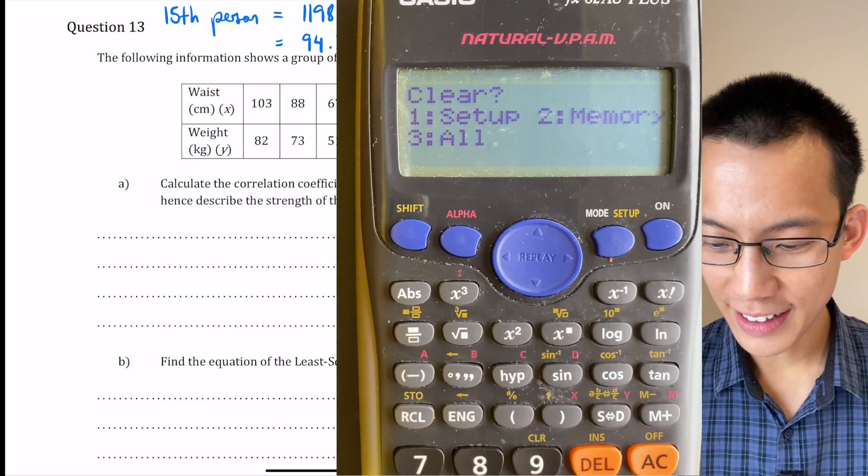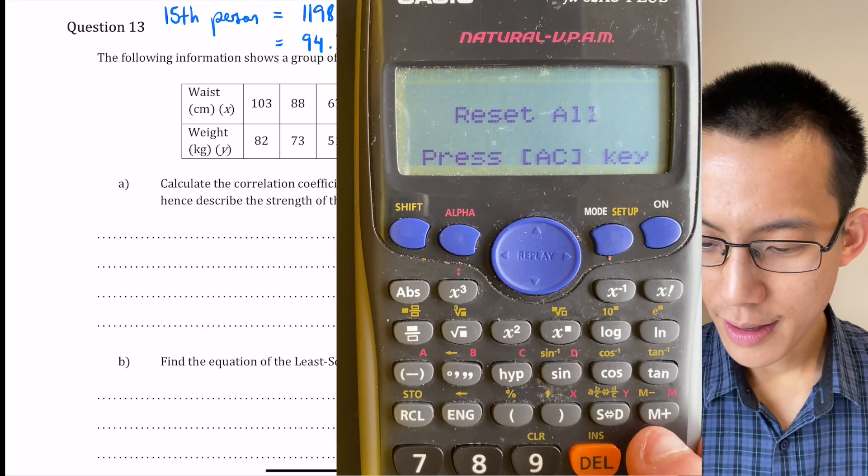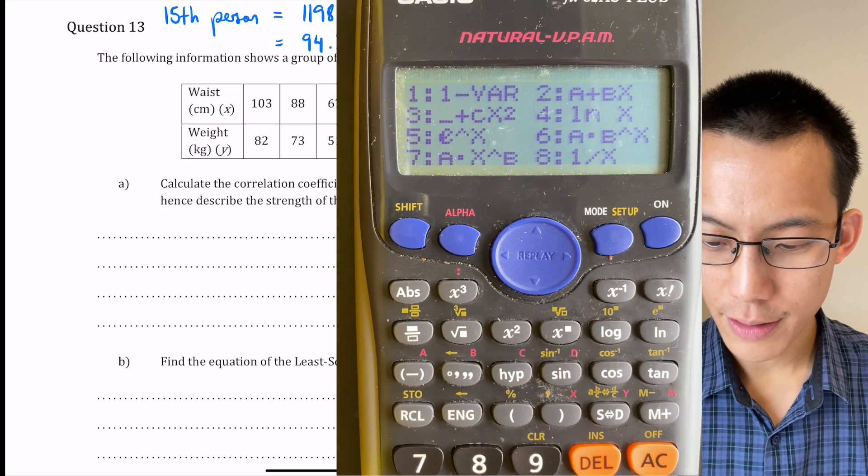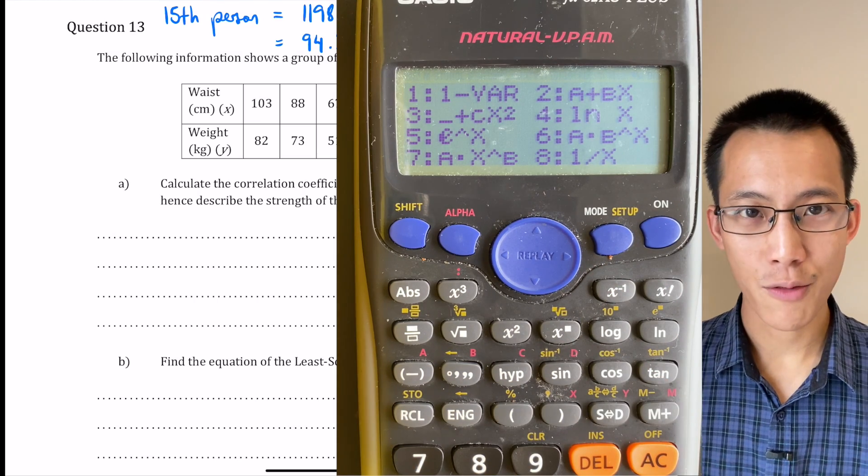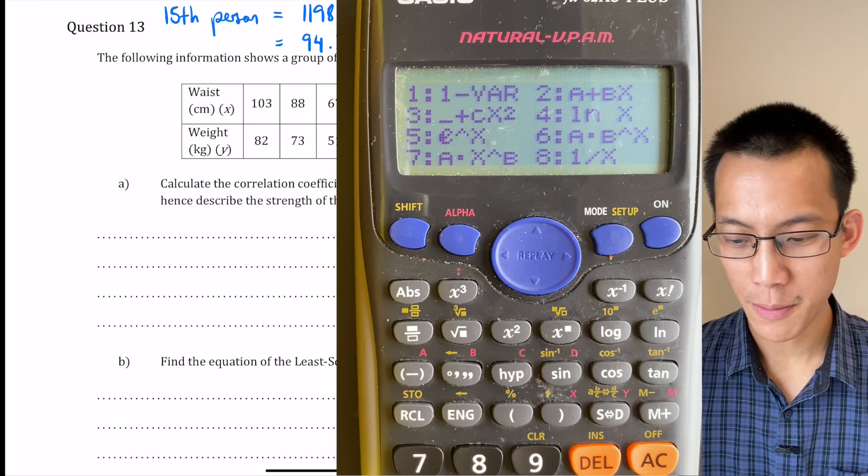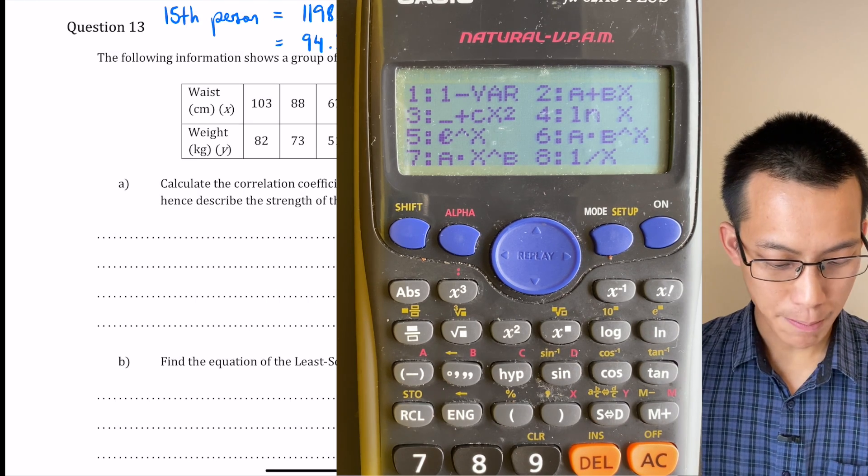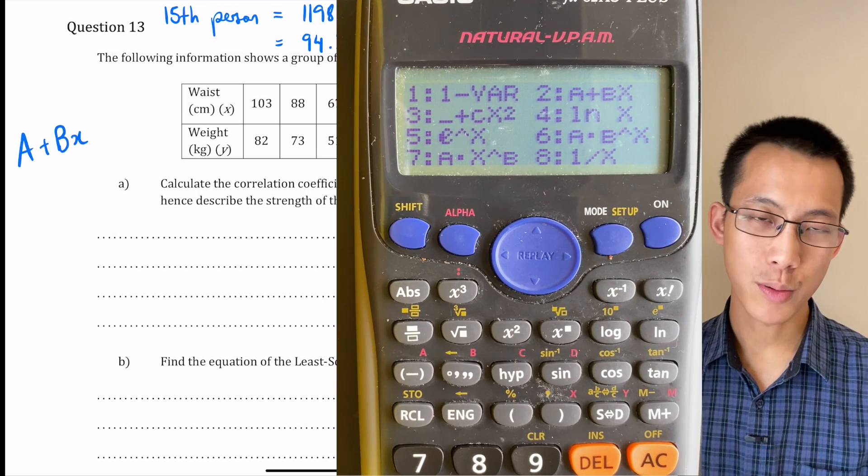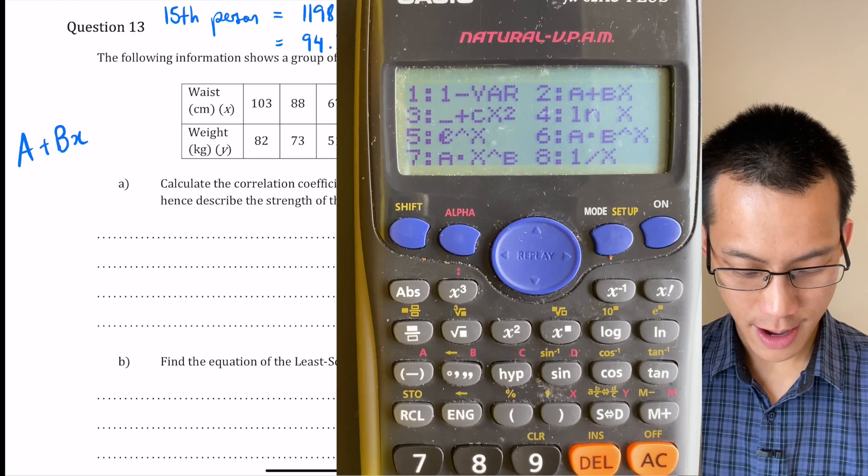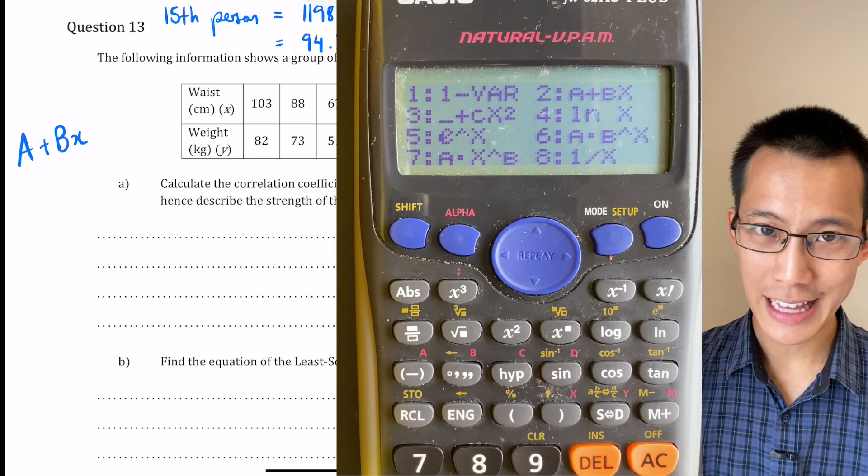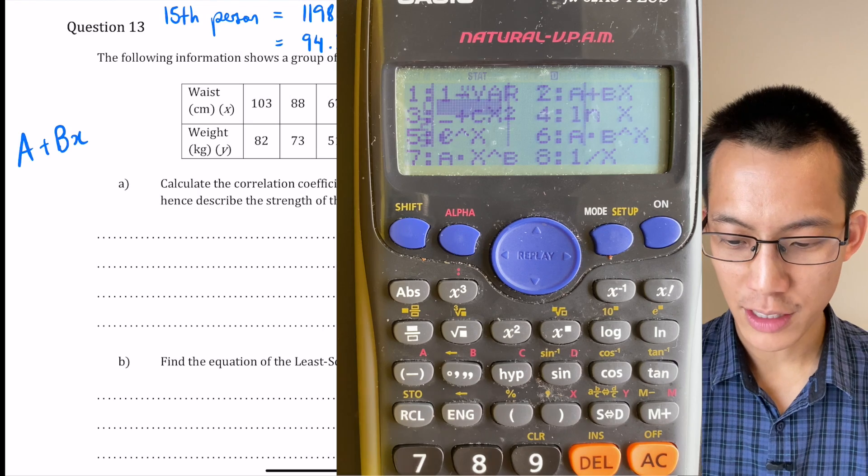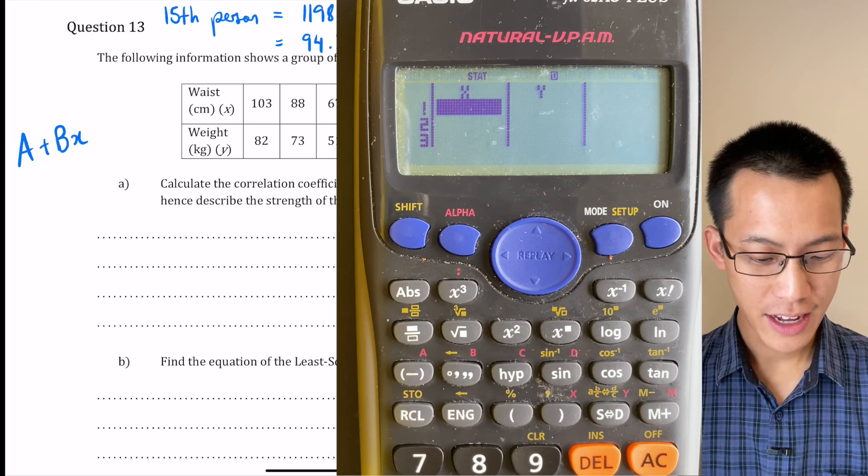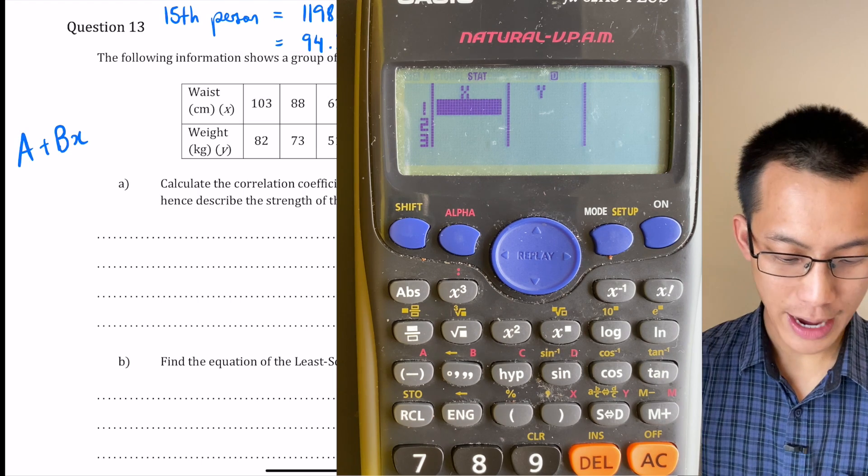Just like before I'm going to clear out all of the data that was in there. All right it's all clear and now when I go to setup stat for 2 you can see to get into bivariate data rather than pressing 1 for a single variable I'm going to press 2 which is A plus BX. That's what tells me that there's going to be two variables there and I'm going to return to that A plus BX when we have a look at the next question but for now let me hit 2 and as we hopefully anticipated you got the two columns there to put in your waist data and your weight data. So let's go ahead and put those in.